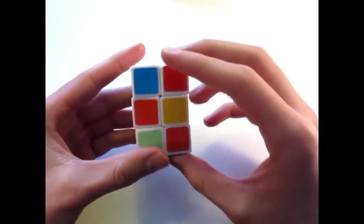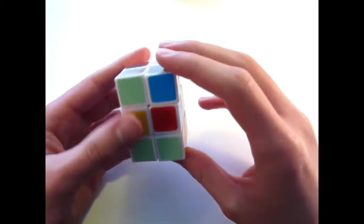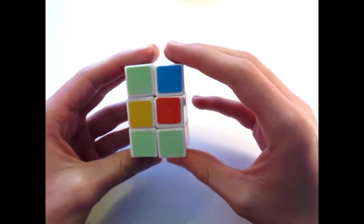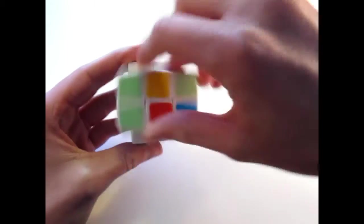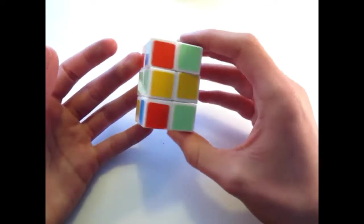So the first thing that you're going to want to do is you're going to want to solve the inside center. So this is very simple. All you basically do is you just go around in a circle and you turn one face 180 degrees and eventually it will go back to a solved position.